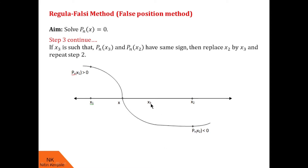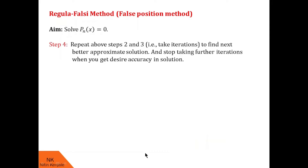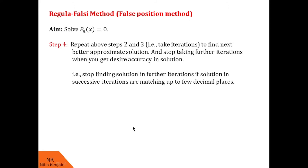If x3 appears on the right side of the curve, then f(x3) and f(x2) will have the same sign. In that case we replace x2 by x3, so the solution interval becomes [x1, x3] and x3 is our new x2. Then we repeat Step 2. Finally, we repeat Steps 2 and 3 to find better approximate solutions until we achieve the desired accuracy — that is, we stop iterating when solutions in successive iterations match up to the required decimal places.